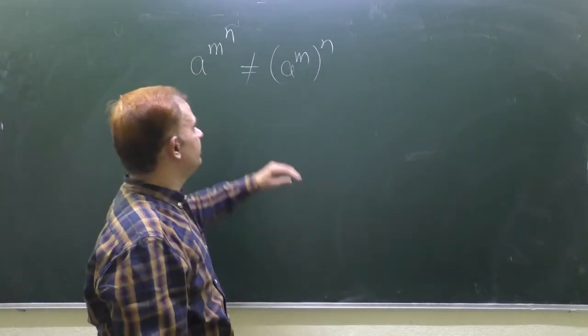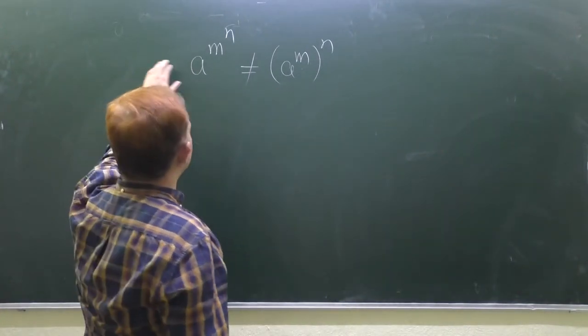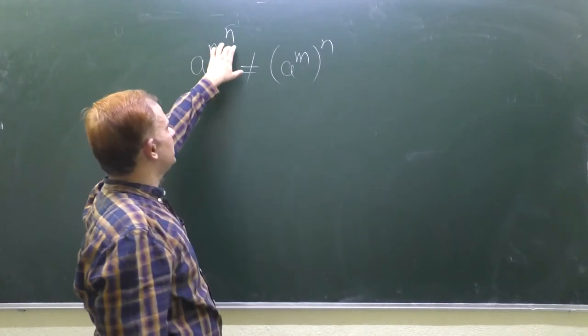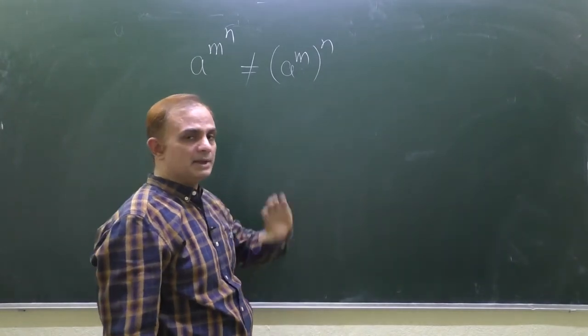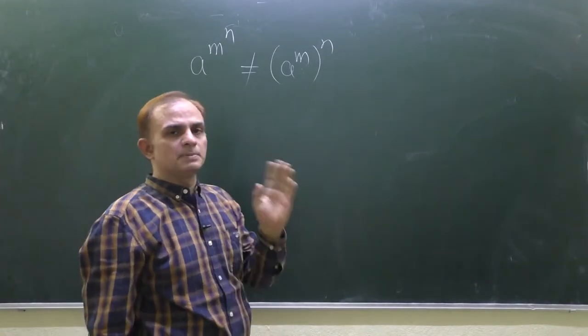Dear friends, we are discussing a very basic question: a to the power m to the power n, and a to the power m whole to the power n. Are they equal? So most of the students think that they are equal, but they are not.